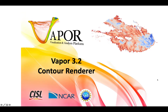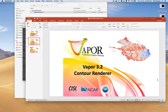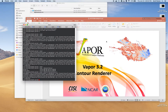Moving on in our VAPOR 3 render tutorial is the contour renderer, which as you'd imagine just draws contour lines in your scene. To start, I will launch VAPOR from my terminal.